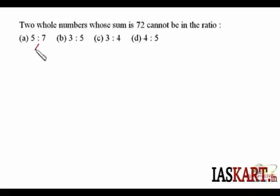So it cannot be the correct choice. Now 3 is to 5—that's 8. 8 is also a factor of 72. That means 72 can be distributed in the ratio 3 is to 5, so even that won't be the right choice.